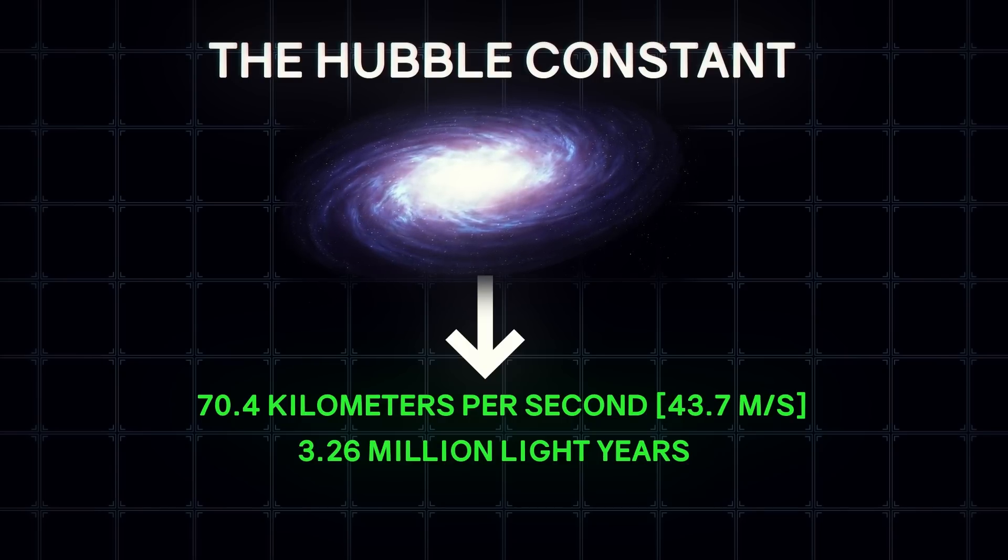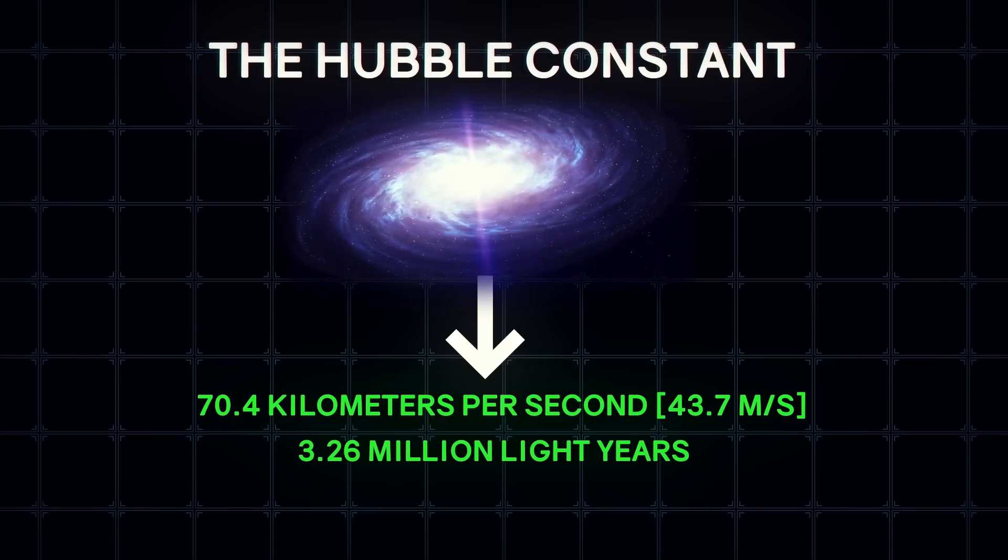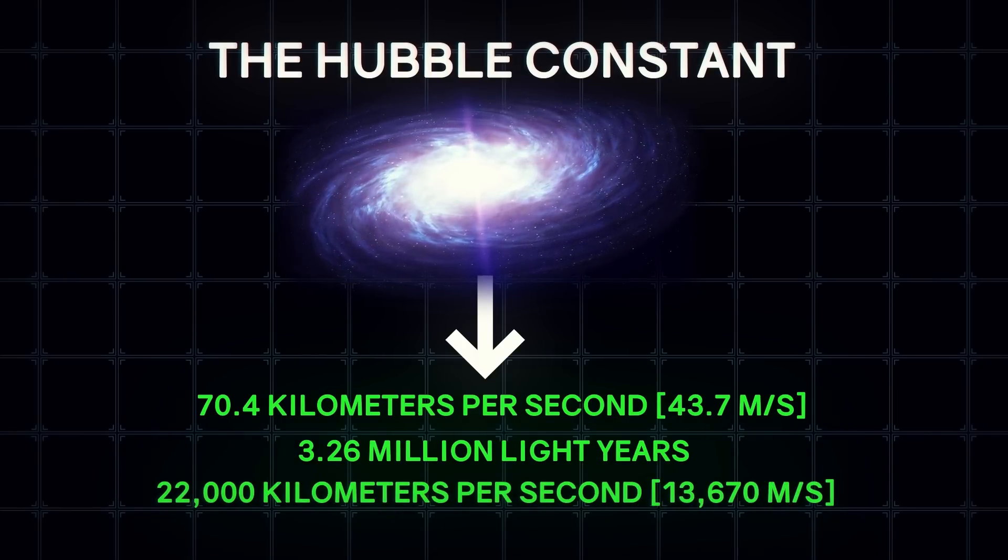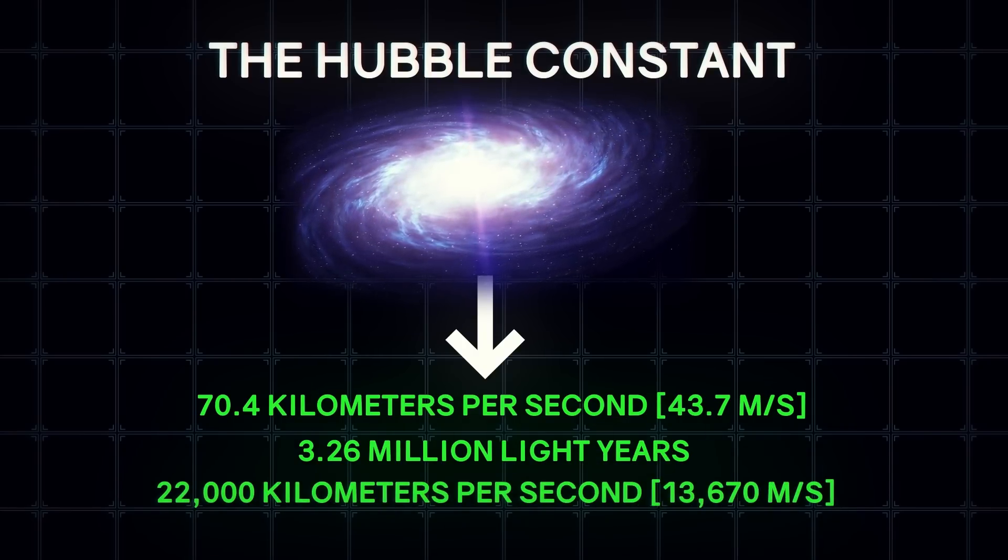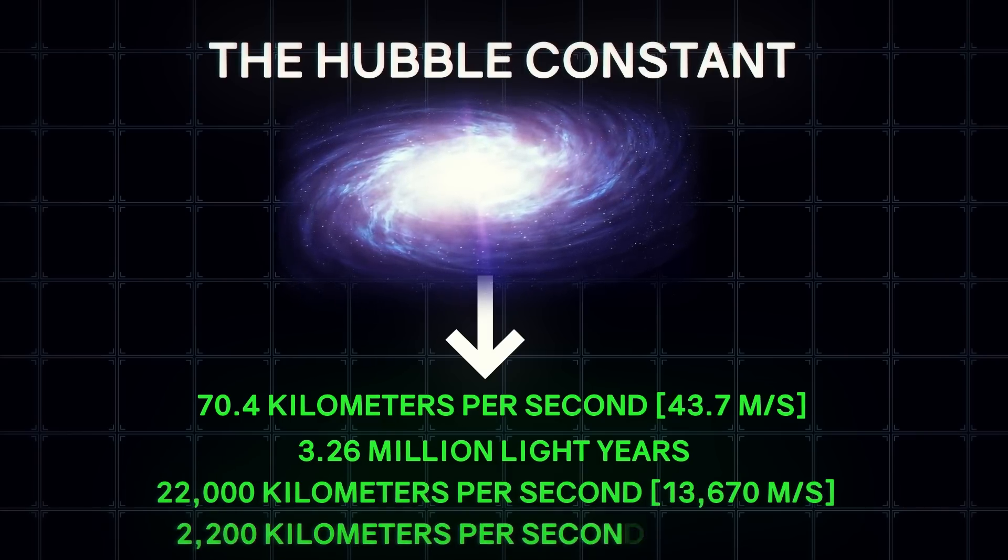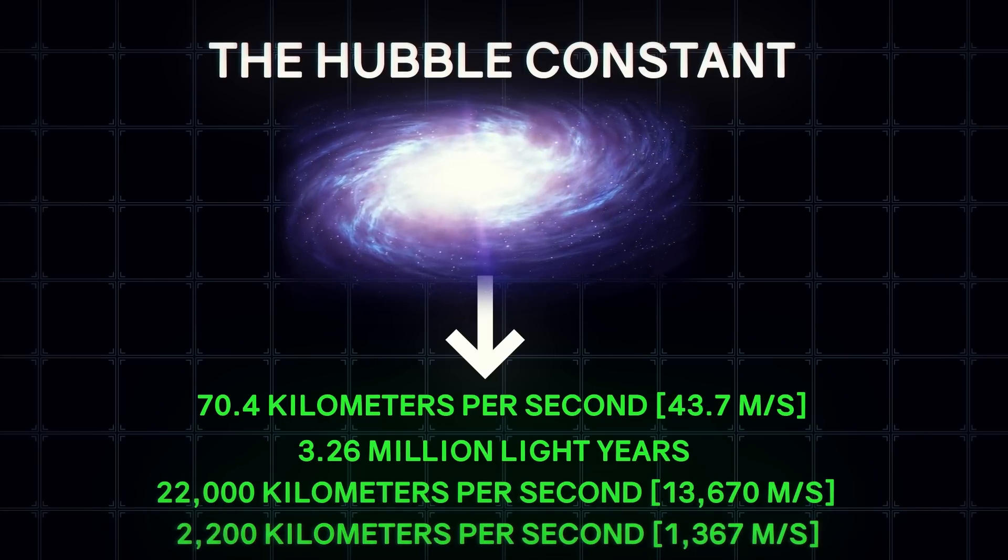At 1 billion light years away, the expansion of the universe is carrying galaxies away from us at 22,000 kilometers per second, or about 7% of the speed of light. But at 100 million light years away, this speed is only 2,200 kilometers per second.